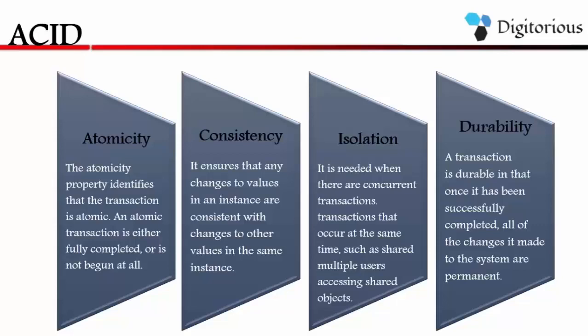Let's see one by one. The first one is atomicity. Atomicity means that transactions in RDBMS should be atomic — it should not be further split into small units to handle. Modifications on data in the database either fail or succeed. If one part of the transaction fails, the entire transaction fails and the database state is left unchanged. An atomic system must guarantee atomicity in each and every situation.